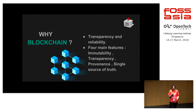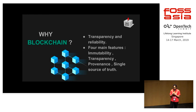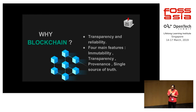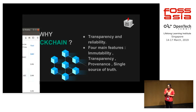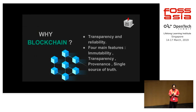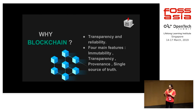Blockchain has four main features: immutability, transparency, provenance, and being the single source of truth. These features are very important for any modern online polling or survey system, and this platform supports all four of them.